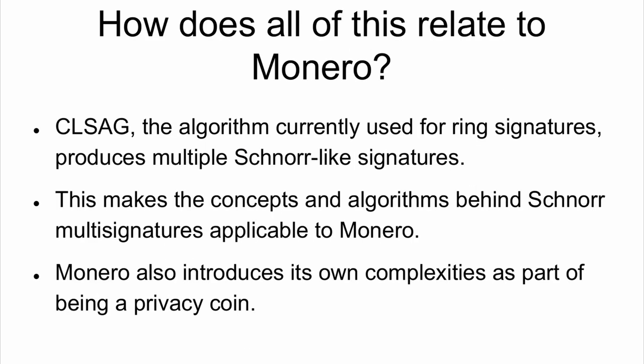So how does all of this relate to Monero? CLSAG, the current algorithm used for ring signatures, produces multiple Schnorr-like signatures. Because of that, all of these concepts and algorithms are applicable to Monero and exactly usable here. Monero also introduces its own complexities, however, as it's a privacy coin — we like to make things hard for ourselves. That's why we don't have payment channels yet.